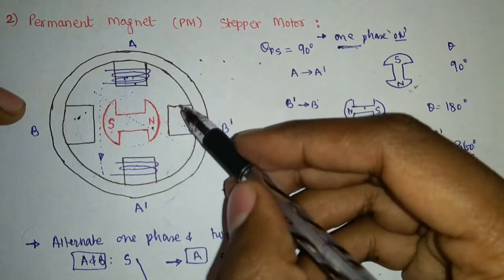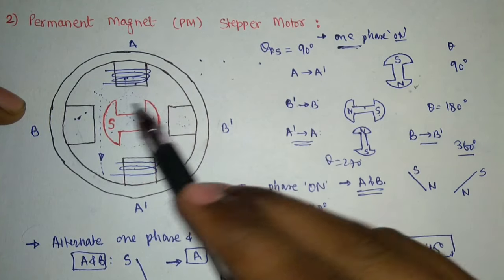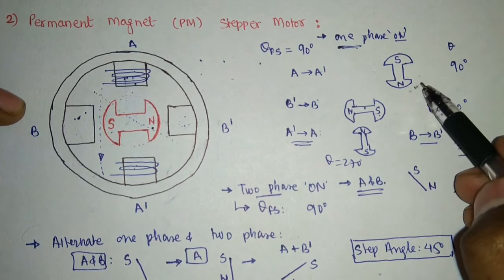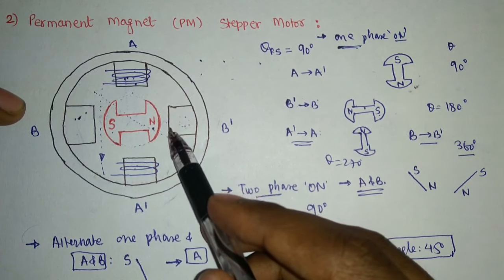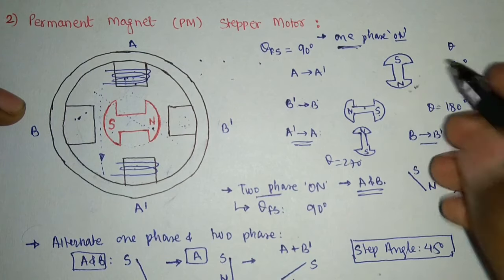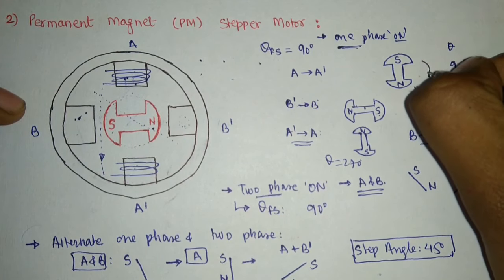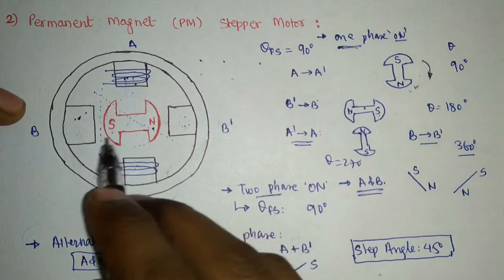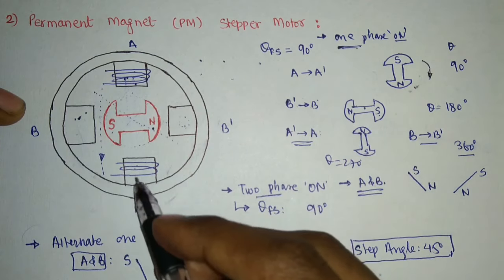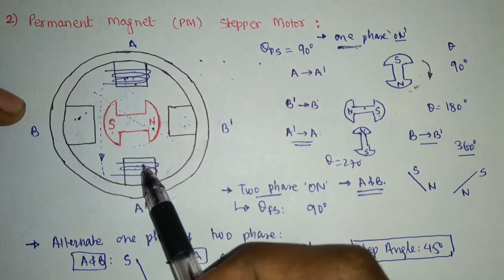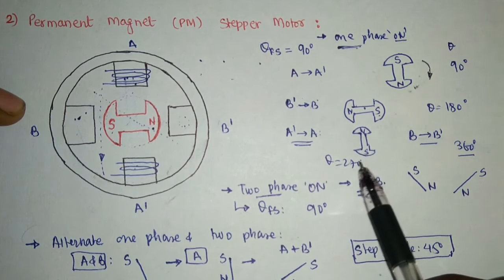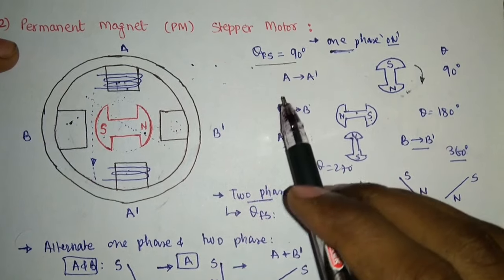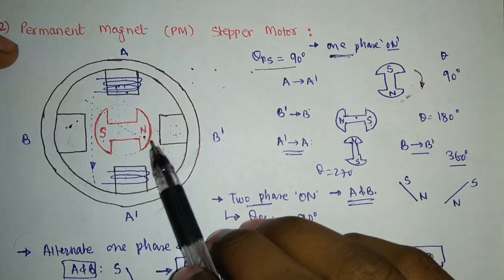The next step: I energize B-dash to B. In that situation, the south pole gets attracted to this side and the rotor rotates again — south pole comes to this direction, north pole on the other side — and that is theta = 180 degrees with respect to the initial position. Then I energize A-dash to A, which attracts the south pole and it turns upside down — theta = 270 degrees. Similarly I can complete theta = 360 degrees. That is the full step operation of a stepper motor.